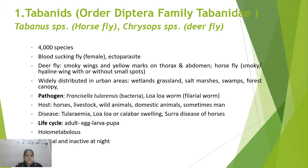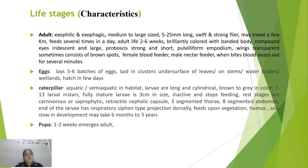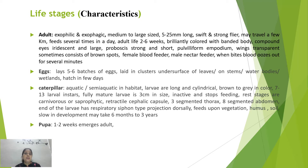As holometabolous insects, tabanids have all four life stages: adult, egg, larva, and pupa. Adults are exophilic and exophagic — they rest and feed outdoors. They are medium to large sized flies, 5 to 25 mm long, strong and swift flyers that may travel a few kilometers. They feed several times a day, and adult lifespan is two to six weeks. They are brilliantly colored with banded bodies and large iridescent compound eyes.